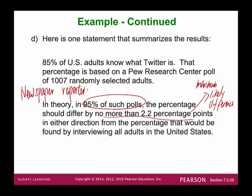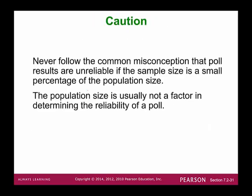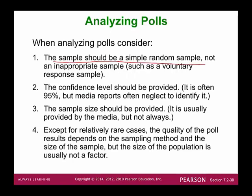By understanding these important terms, you'll be able to understand what polls try to tell us. When analyzing a poll, consider: the sample should be a simple random sample; the confidence level should be provided — usually 95% by industry convention, though media often neglect to identify it; the sample size should be provided. The quality of poll results depends on the sampling method and sample size, not the size of the population.